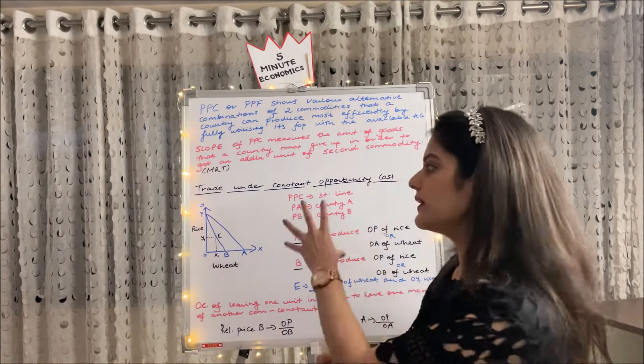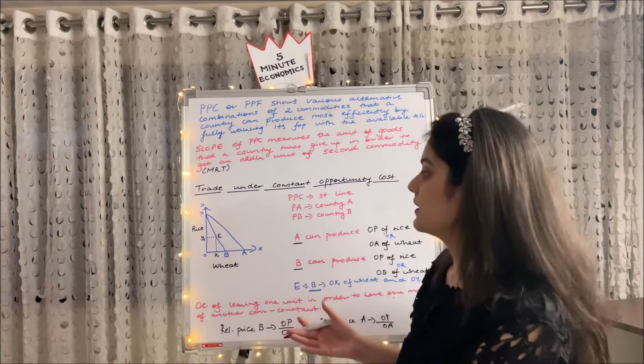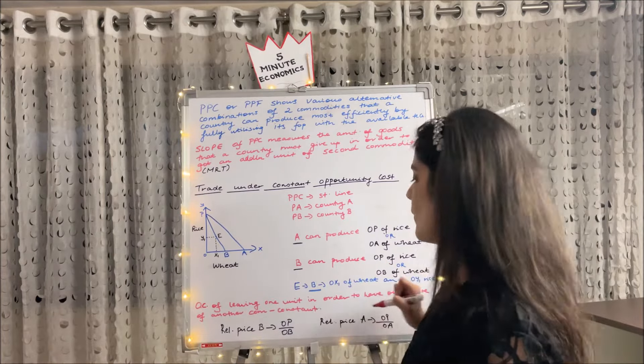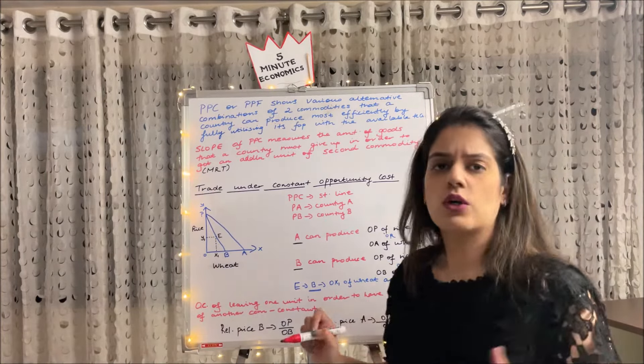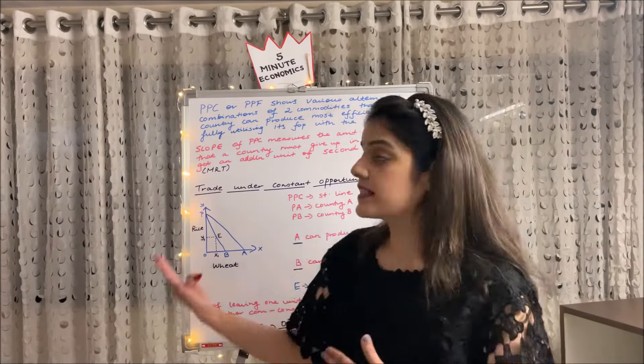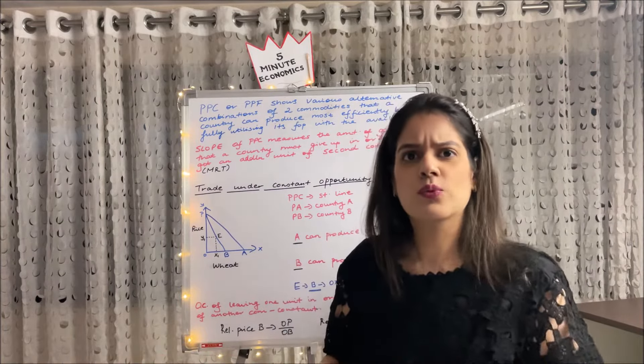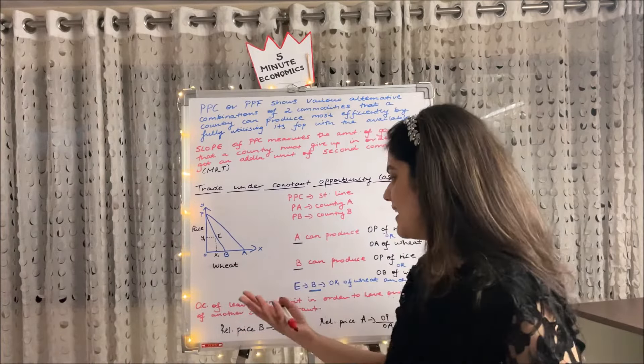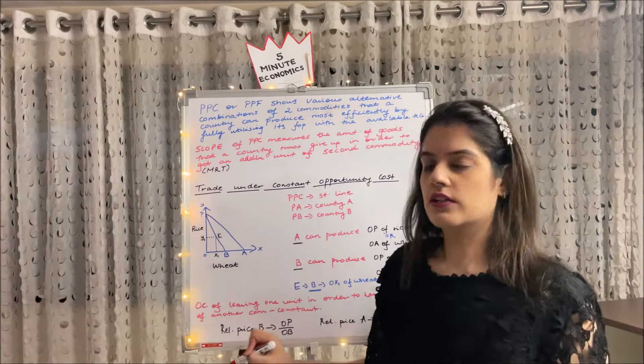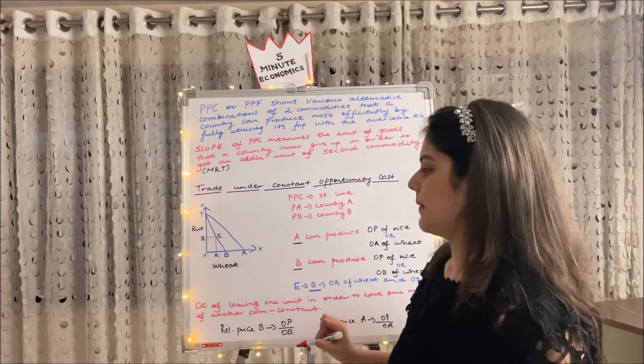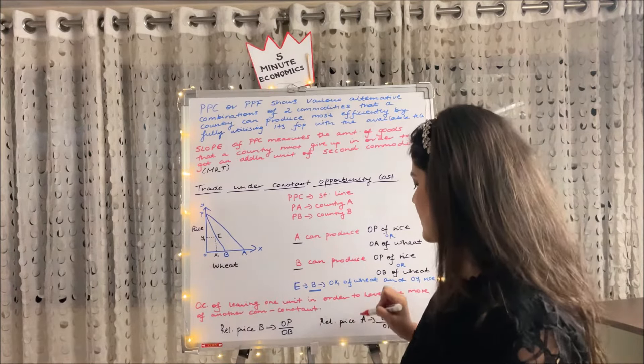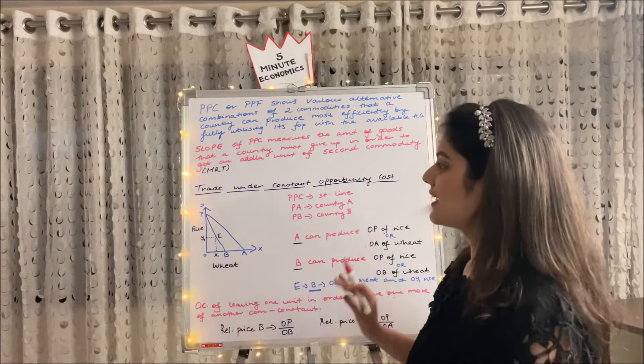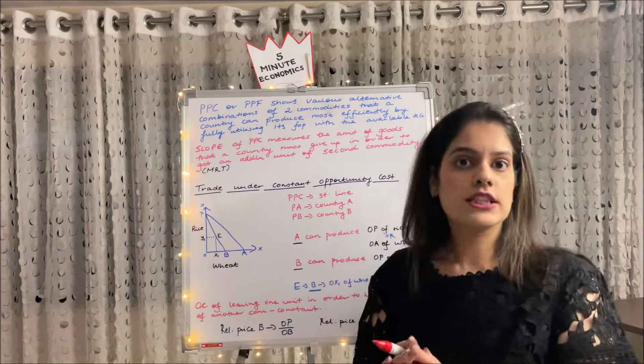So basically, what is this diagram denoting or what are we trying to observe or learn in this? We are seeing that the opportunity cost of leaving one unit in order to have one more of another commodity is constant. Basically, it means that we have to give up 10 units of rice. It is constant. 10 we are leaving and 10 we are gaining. And here the relative price ratio also we can have for country B is OP upon OB, whereas the relative price for country A is OP upon OA. I hope you are clear with the trade under constant opportunity cost.